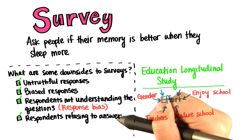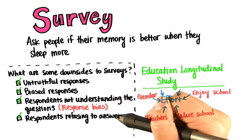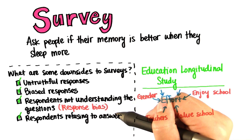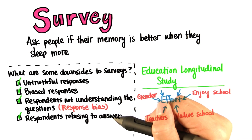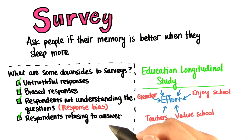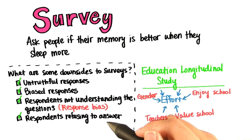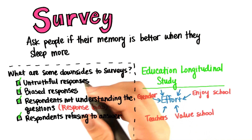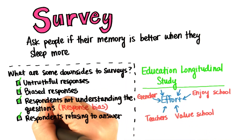And finally, some people just refuse to answer. They don't feel comfortable answering, or they're incapable of doing so. There might be a certain group of people who don't answer the questions, and therefore the data that we get from the survey doesn't accurately represent them. When certain people refuse to answer, this is called non-response bias.